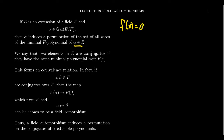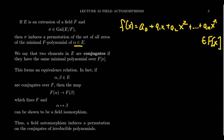So we write F(X) as A₀ plus A₁X plus A₂X² all the way down to AₙXⁿ. We're viewing this as an F polynomial. Alpha is a root of it, so we have that F(alpha) is equal to zero.